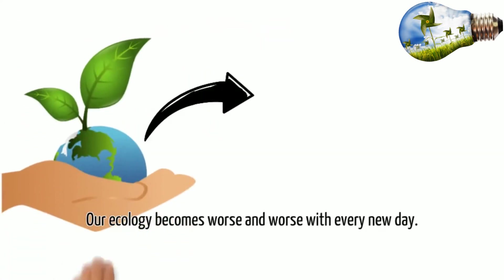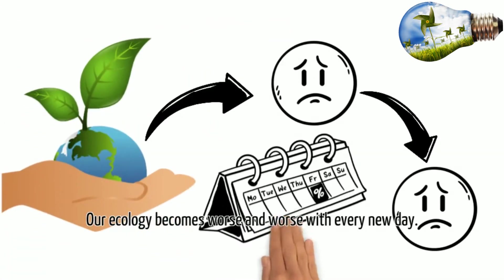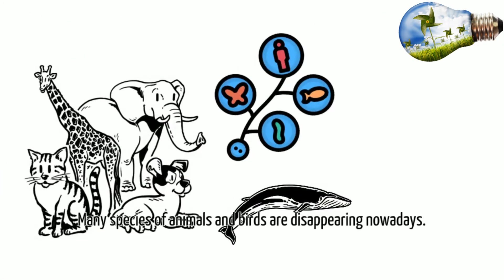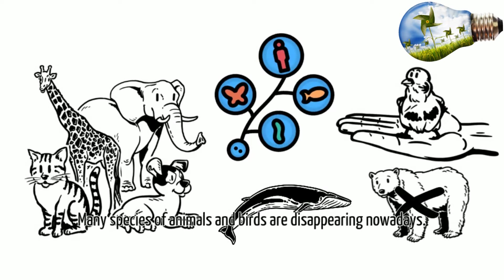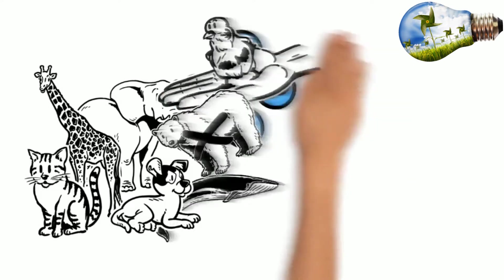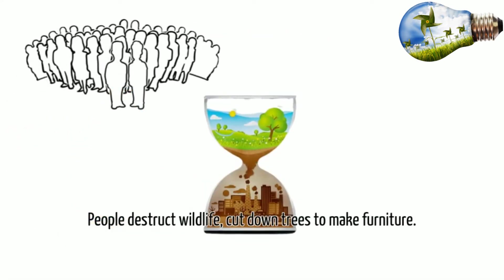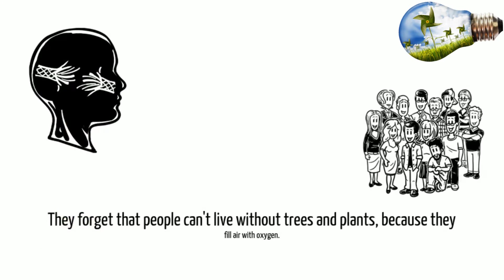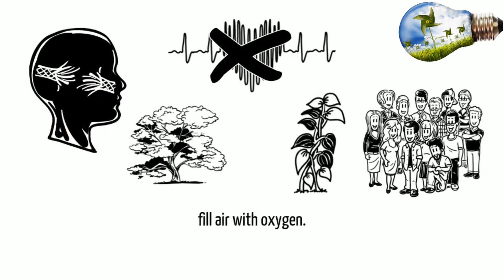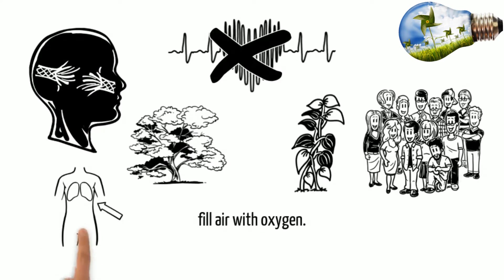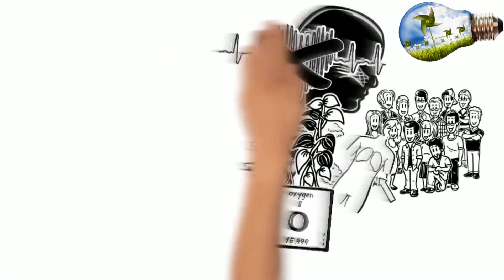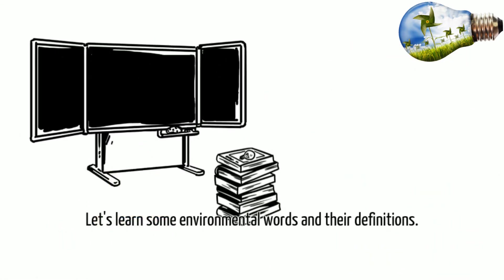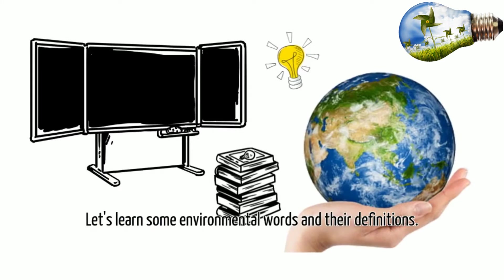Our ecology becomes worse and worse with every new day. Many species of animals and birds are disappearing nowadays. People distract wildlife, cut down trees to make furniture. They forget that people can't live without trees and plants because they fill air with oxygen. They forget that people can't live without rain. Let's learn some environmental words and their definitions.